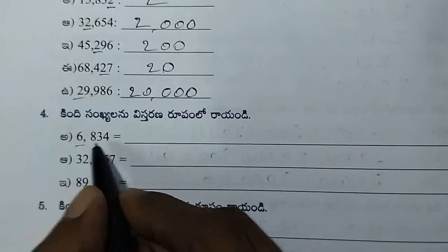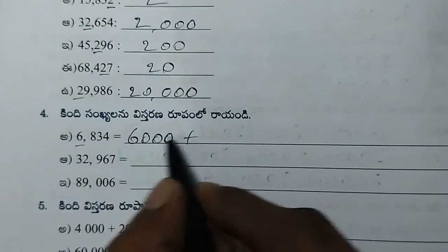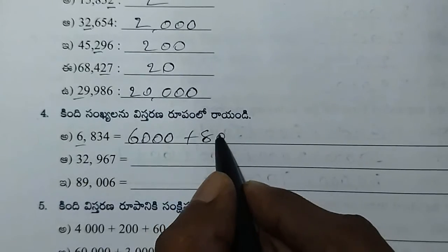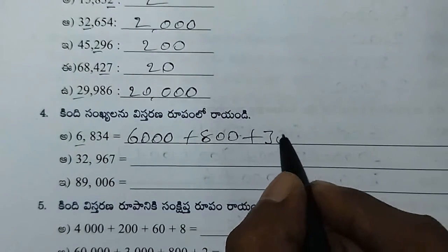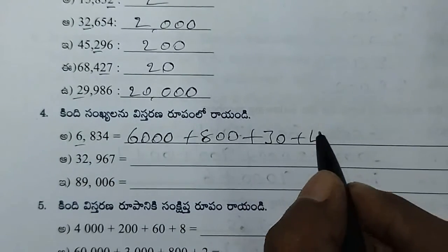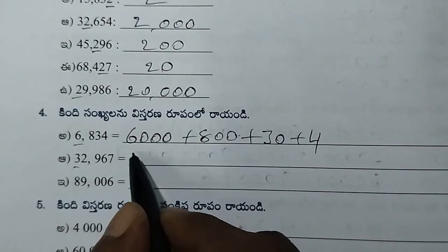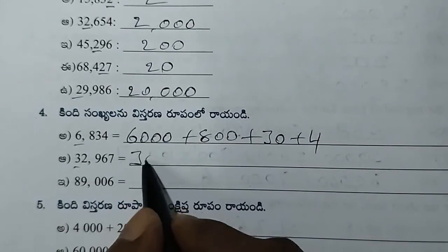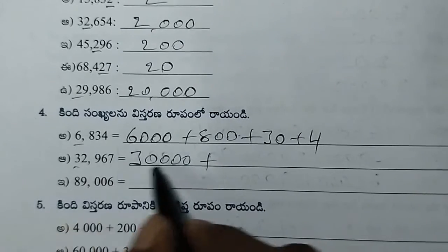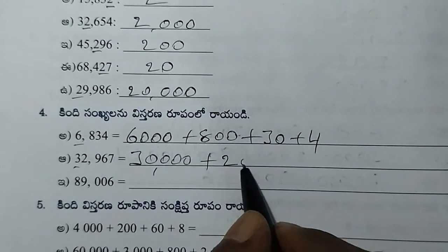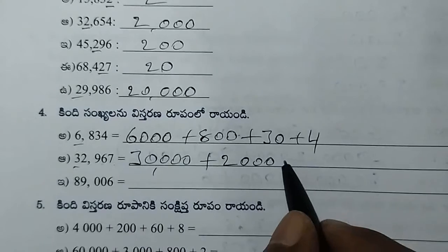6,000 plus 800 plus 30 — 40 — 30,000 plus 2,000 plus 967.